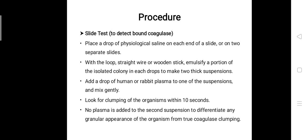One important thing: the section of the test without plasma should still look milky. If this section also develops clumps, then the result cannot be interpreted, and such strains should be further tested with the tube coagulase method.